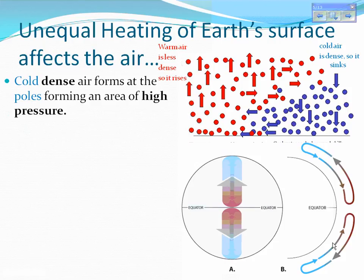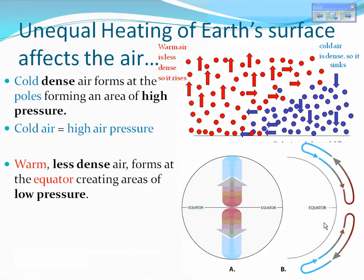This same thing happens when you look at the equator and the poles of earth. Cold dense air from the poles forms an area of high pressure — so at the poles, cold air means high pressure. Warm less dense air forms at the equator, creating areas of low pressure. Warm air equals low pressure because those molecules are rising up and spreading out.